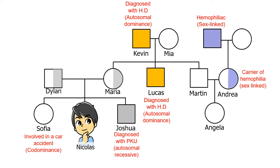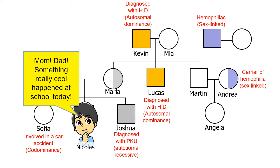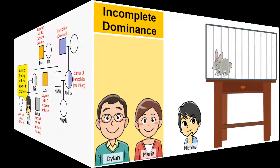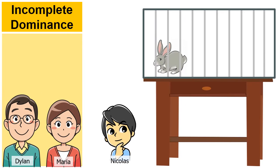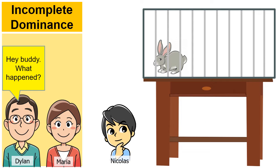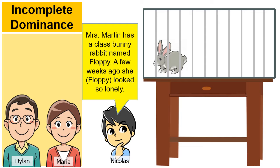Now Nicholas — let's hear from him today. He says: 'Mom, Dad, something really cool happened at school today. Miss Martin has a class bunny rabbit named Floppy. A few weeks ago she looked so lonely.'